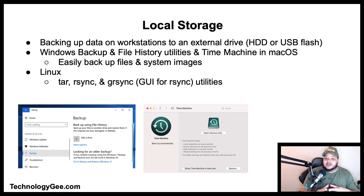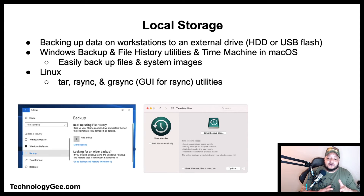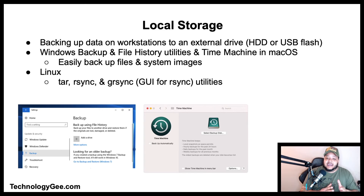Next we have local storage. Local storage consists of backing up data on workstations to an external drive such as a hard drive or USB flash drive. The Windows Backup and File History utilities and Time Machine in macOS easily backup files and system images to external hard drives. Depending on the distribution of Linux being used, it can include utilities such as the command-line tar, rsync, or grsync, which stands for GUI for rsync.